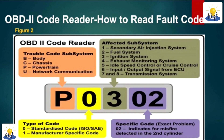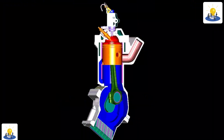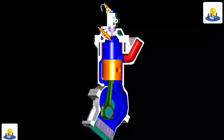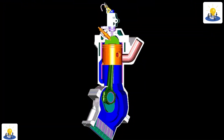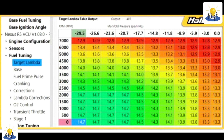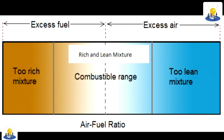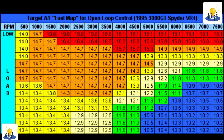In addition to these codes, the technician can also view live sensor data through the diagnosis tool while the vehicle is running. This allows them to see a sensor reading that is incorrect but not out of tolerance by enough of a margin to flag a fault code.